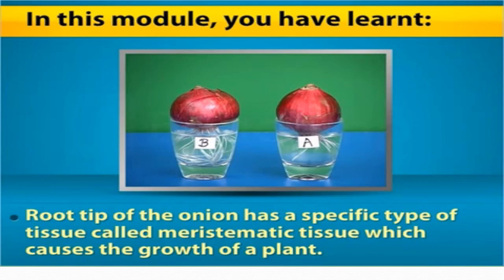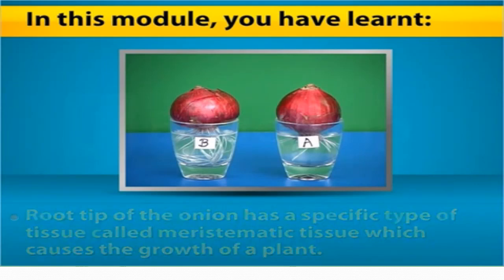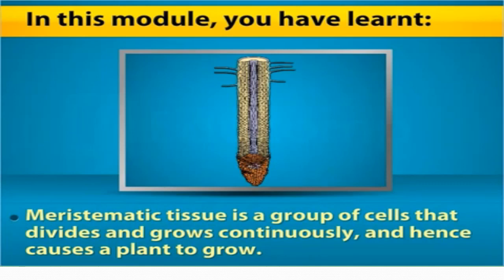From this activity, it can be concluded that the root tip of the onion has a specific type of tissue called meristematic tissue, which causes the growth of the plant. Meristematic tissue is a group of cells that divides and grows continuously, causing a plant to grow.